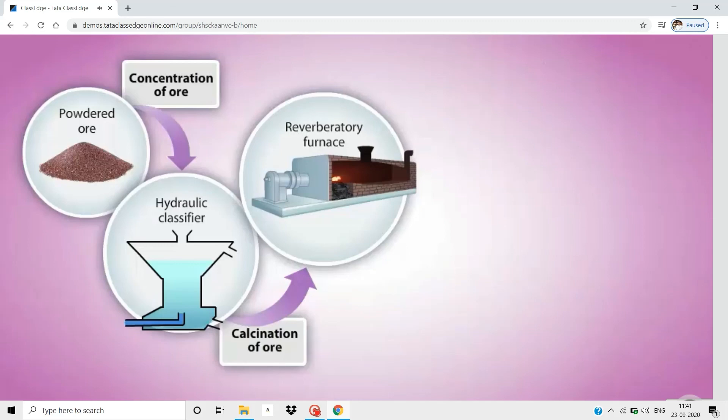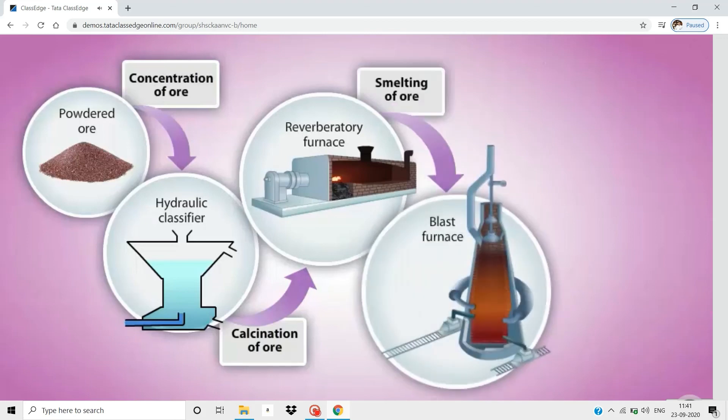The calcined ore is smelted in a blast furnace. During this process, iron oxide is reduced to iron. The molten iron obtained is called pig iron. It is solidified in sand molds and cast into various shapes.